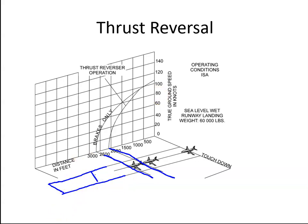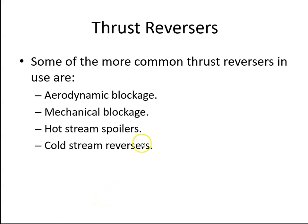How is thrust reversing achieved? There's a couple of methods: aerodynamic blockage, mechanical blockage, hot stream spoilers, or cold stream reversers. But let's concentrate on the mechanical blockage because it encapsulates the whole theory behind thrust reversers.